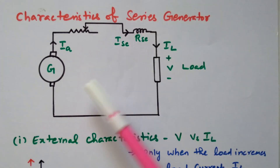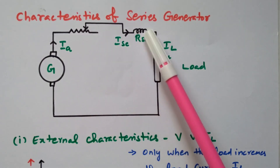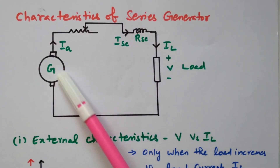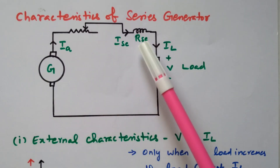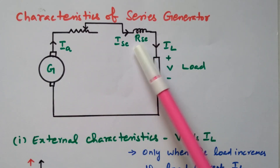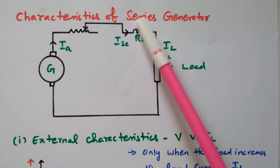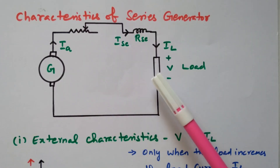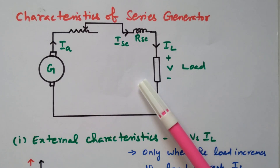If it is a series generator, the armature and field are connected in series. The armature is the rotating part where the coils are available. The field is the stationary part where the magnetic field is created. Since both are connected in series, it is called a series generator.